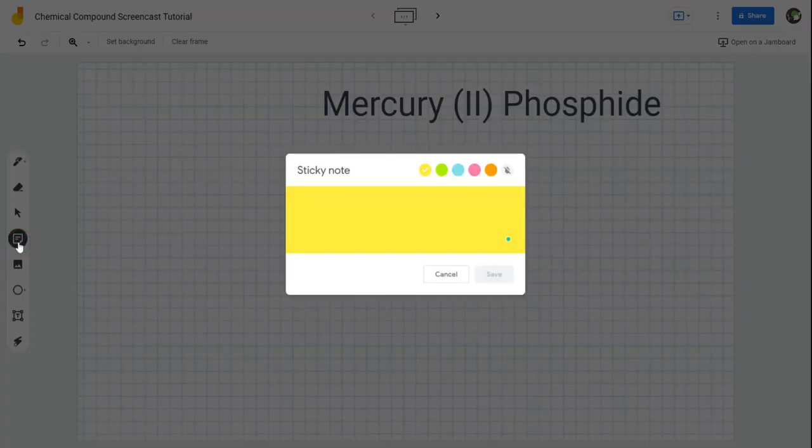The very first thing we need to do is recognize that this is an ionic compound. The reason it's ionic is because it's made of a metal and a non-metal.